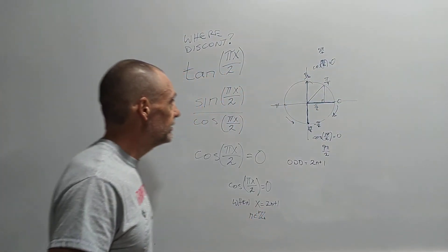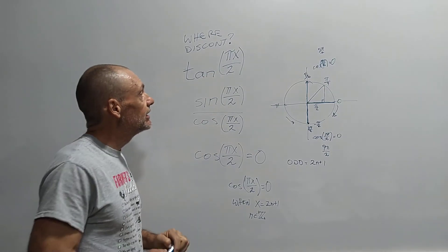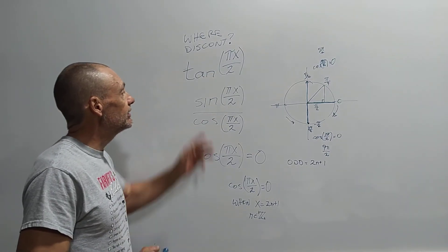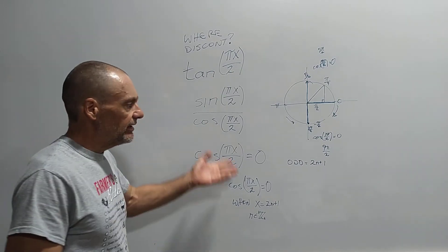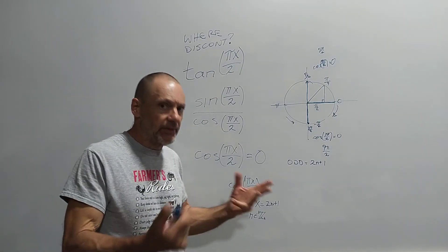Okay, so I got a question about this function right here, tangent pi x over 2. And the question is, where is it discontinuous? It's already on the board because I already made a video about this, but it came out too long.